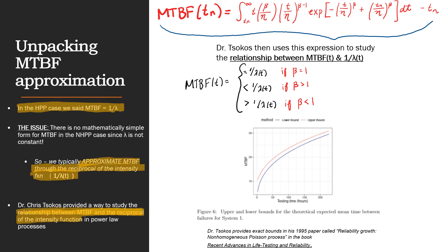Dr. Chris Tsokos provided a way to study the relationship between MTBF and the reciprocal of the intensity function in power law processes through this expression up at the top. So, this is the expression he has for MTBF and power law processes, and then uses this expression to study the relationship with 1 over the intensity function. Now, we won't walk through this exact derivation of how he got this expression for MTBF, but what is useful to observe is that when β equals 1, MTBF equals the approximated MTBF. So, 1 over the intensity function.